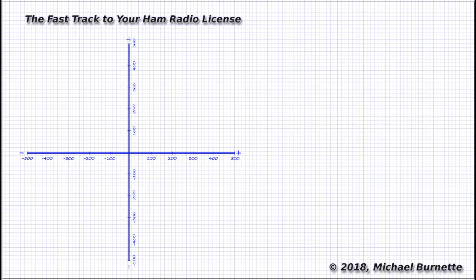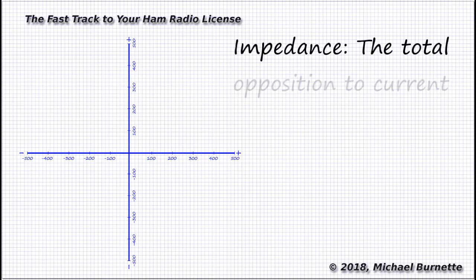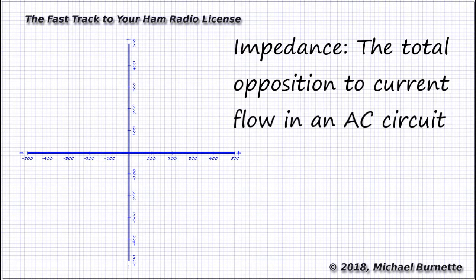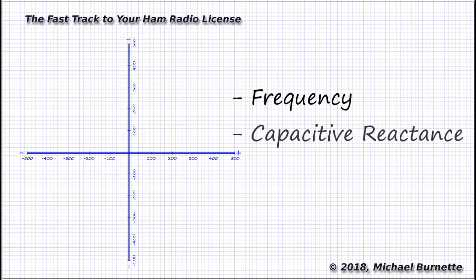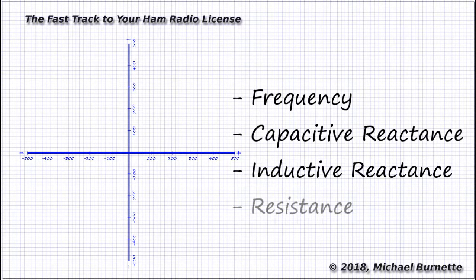So let's review impedance basics real quickly. Impedance is the total opposition to current flow in an AC circuit. It is created by the interaction of four values: frequency, capacitive reactance, inductive reactance, and resistance.